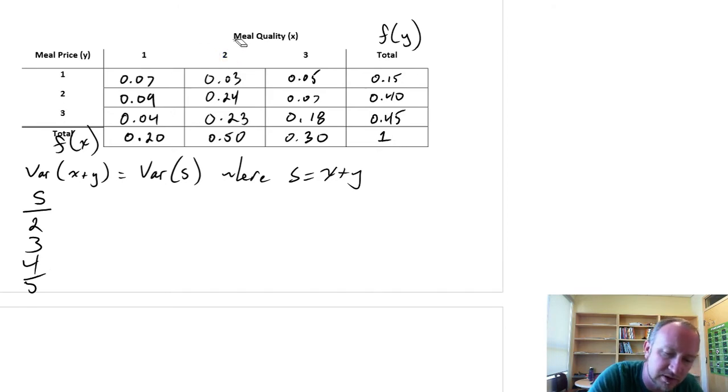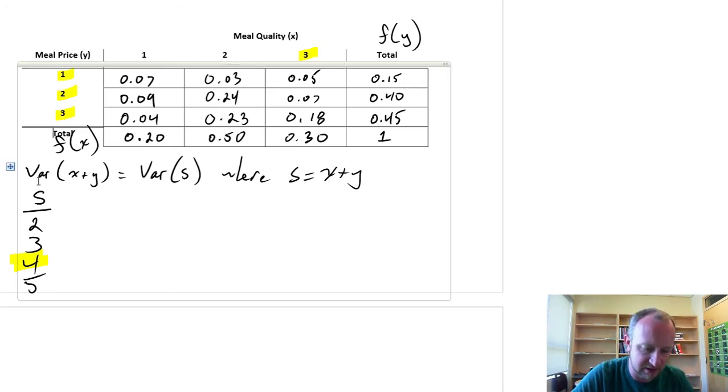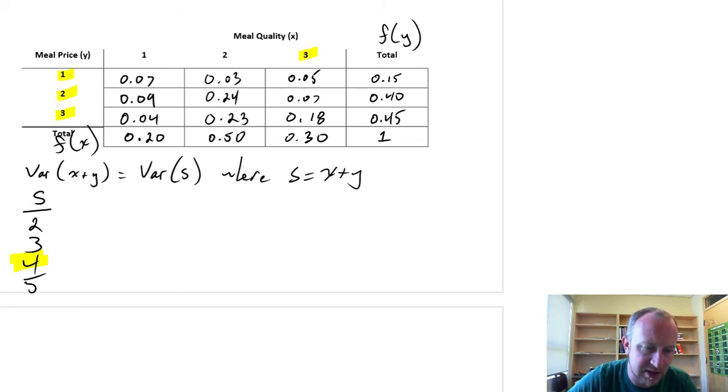Now we move on to x is equal to 3. If x is 3 and y is 1, well there's 4, we already have 4. 3 plus 2 is 5, we already have 5. 3 plus 3 is 6, there's a new value for s. So s can also be 6. So those are all the possible values that our new variable s can take: 2, 3, 4, 5, or 6.